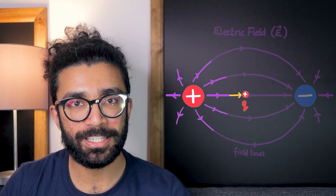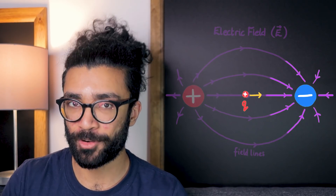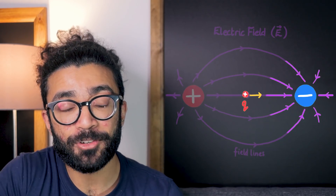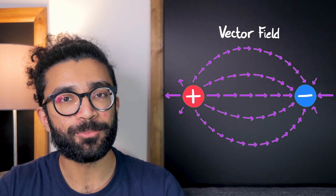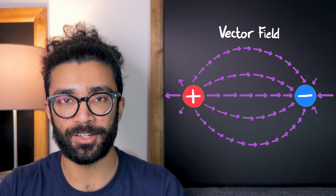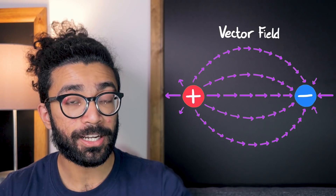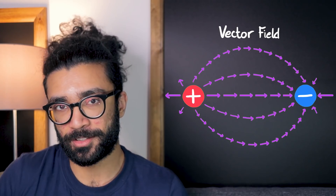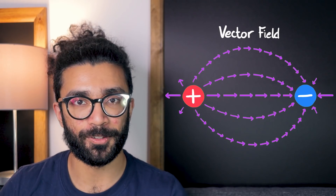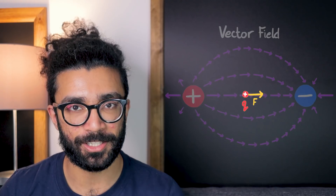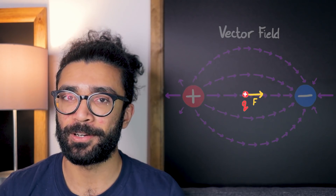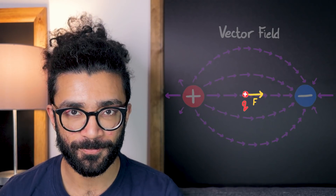Like charges repel each other, and unlike charges attract. Now another important point worth knowing is that electric fields are vector fields. This means we can assign a vector to every point in the region of space that we're studying. The direction of a particular vector tells us the direction of the electric field, or in other words the direction of the force experienced by a small positively charged particle, and the magnitude of this vector tells us something about the size or the strength of the force.